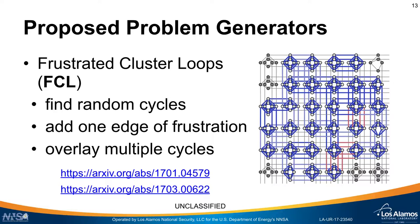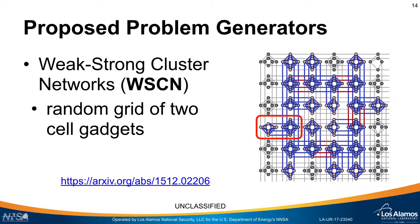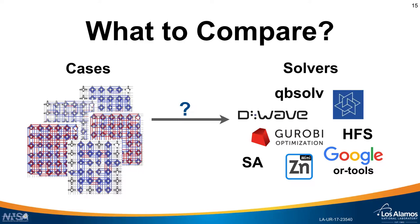In the frustrated cluster loop, each cluster is then linked together with frustrated cycles. There's also the weak-strong cluster network problem, where you take two adjacent unit cells and give them different structure: some have a strong field one way and a strong field the other way, all linked together wanting to take the same value, so they're fighting each other. The two unit cells connected together — circled in red — are connected with random sets of edges, while the blue blocks are connected at random.